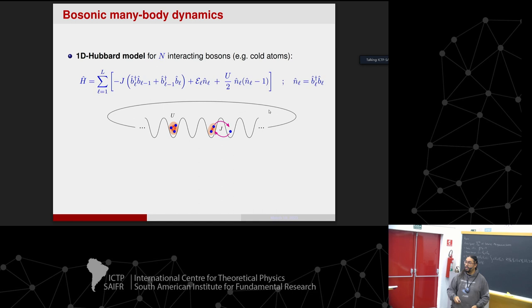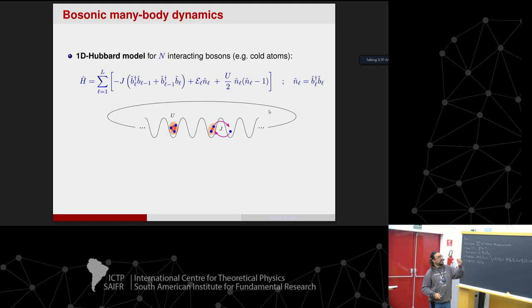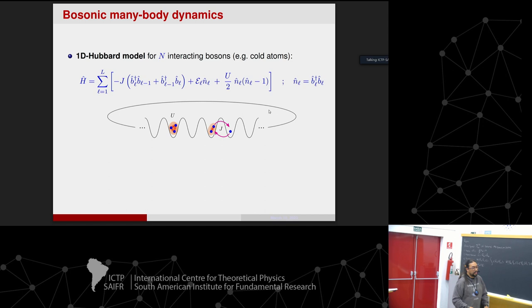The on-site energies are the potentials, expressed in second quantization as a coupling to the number of particles at each site. The interaction between atoms is assumed to happen only when atoms are on the same site — a simplification. When I mention a Hamiltonian from now on, this Bose-Hubbard Hamiltonian is what I mean.